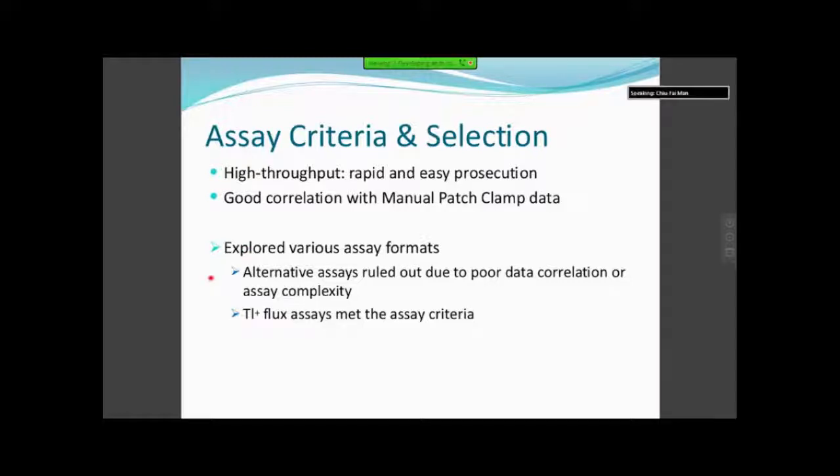At the start of the project, we set up some assay screening criteria. We knew that we wanted an assay that was high throughput, which meant that it had to be rapid and easily prosecuted. We also wanted the data to correlate well with manual patch clamp. We explored various assay formats that were available and ruled out alternative assays that had poor data correlation or assay complexity. In the end, we decided that we wanted to run a thallium flux assay.